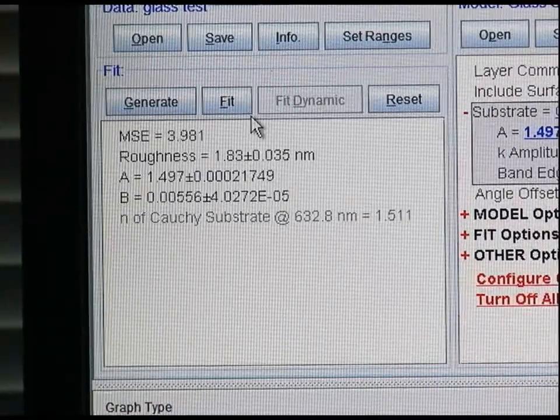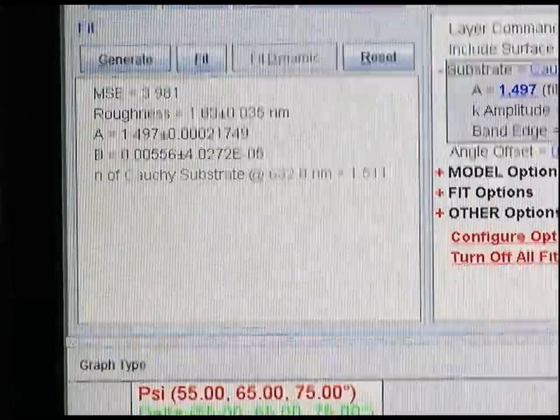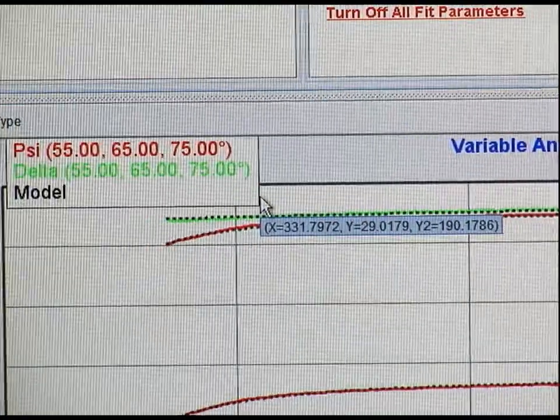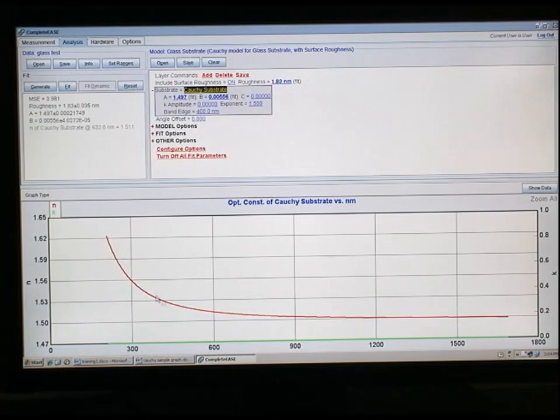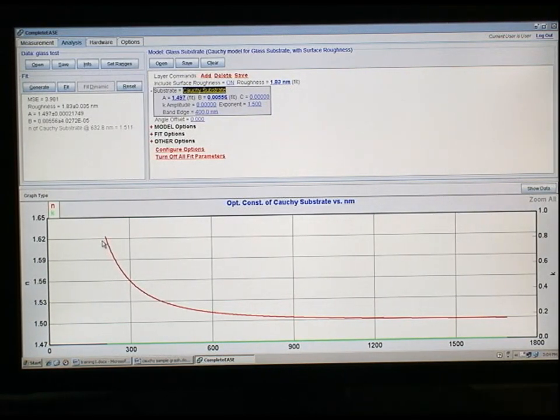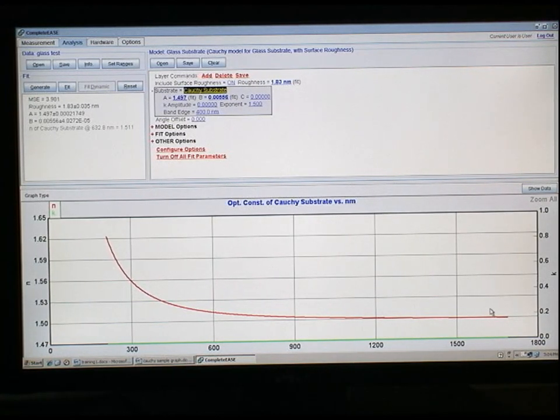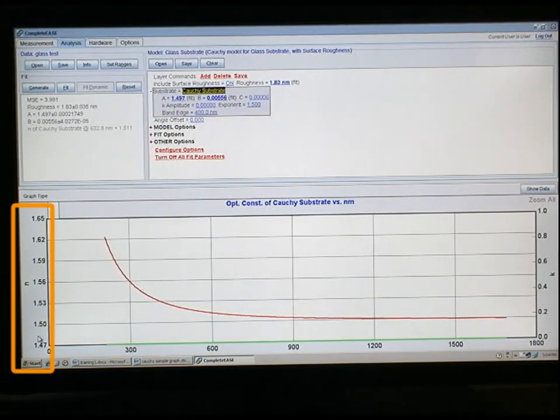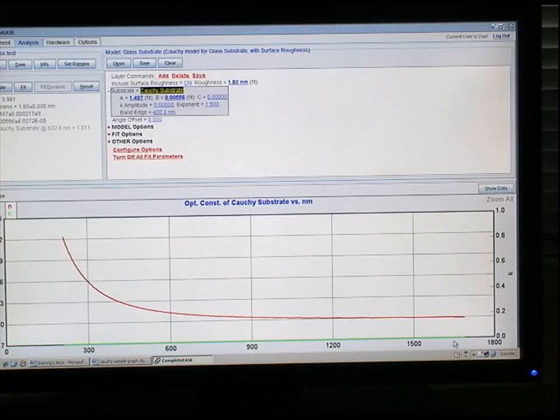Now that we have a generated model, we're still looking at measurements of different changes in magnitude and phase of the polarization. To actually look at the refractive index of the material, we want to right click on our substrate and graph the layer optical constants. Now we have a graph of N and K of our material for a variety of different wavelengths. Specifically N here is shown in red and that's our real portion of our refractive index of our glass substrate. K is shown in green, which is nearly zero. The N value is shown on the left-hand side axis and the K values are shown on the right-hand side, all as a function of wavelength shown on the X axis here in nanometers.